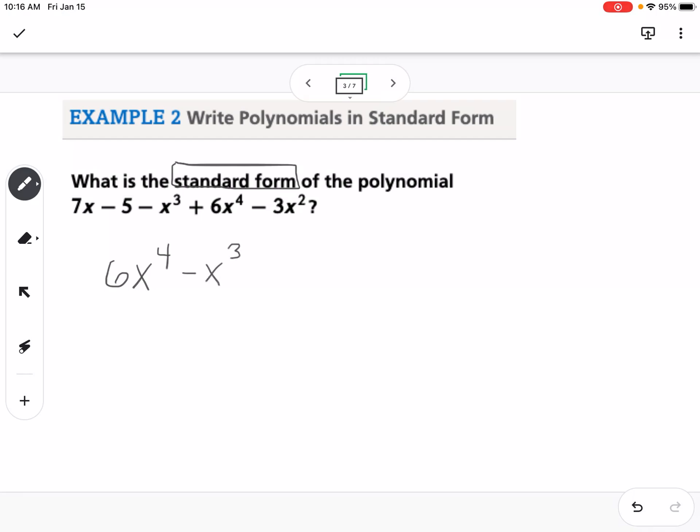then minus x to the 3rd. Notice I'm keeping the sign that comes in front of each term. So if it's minus, we need to keep that minus, then minus 3x squared, then plus 7x, then minus 5. So this would be standard form, because the degree is from the highest power to the lowest power.